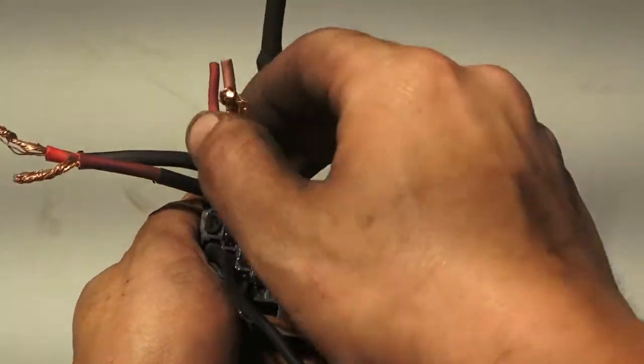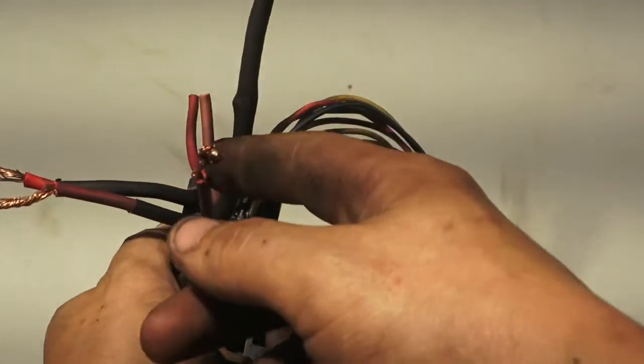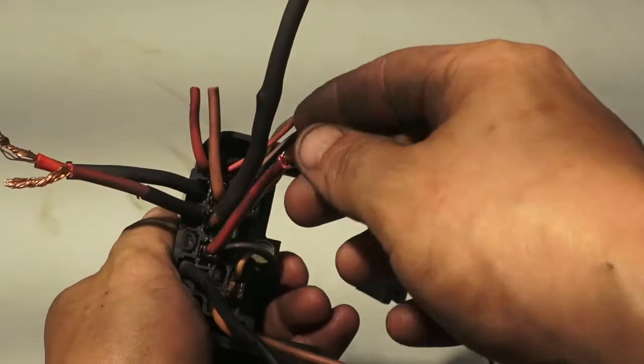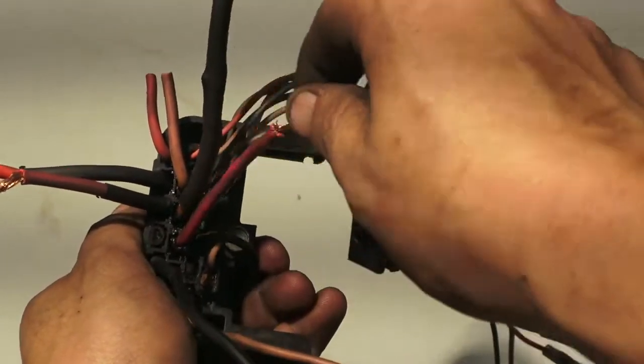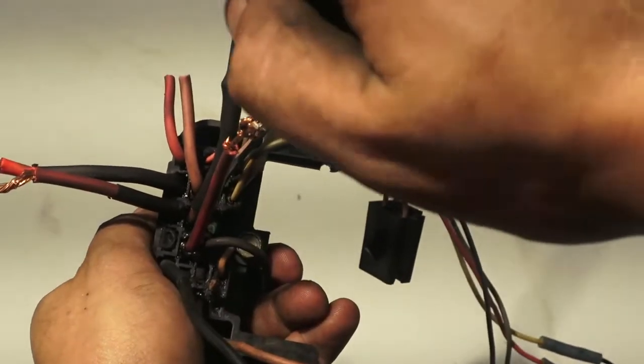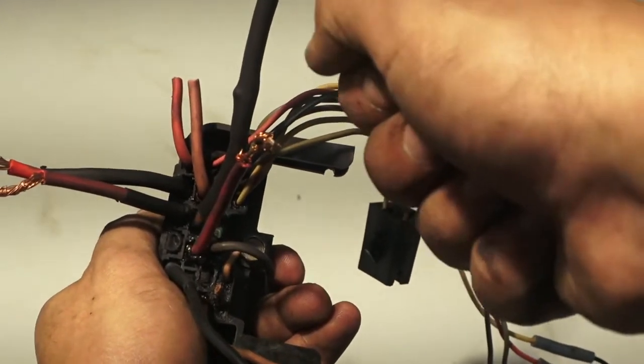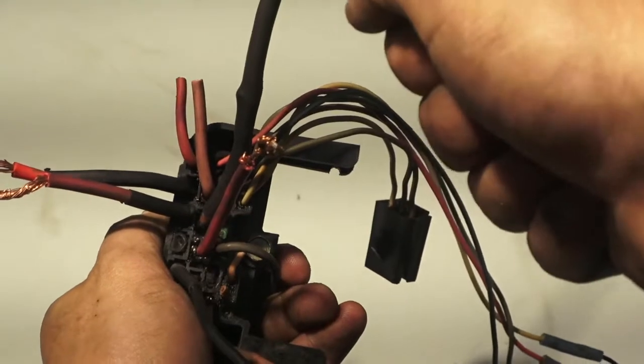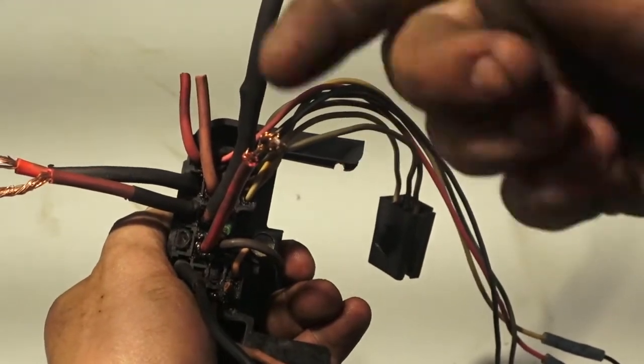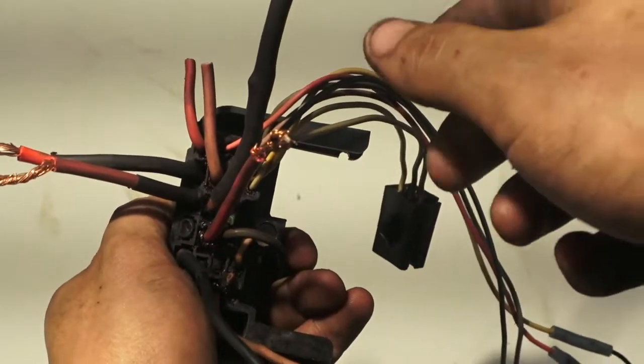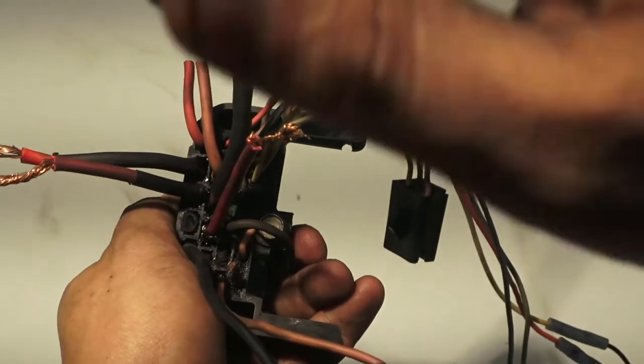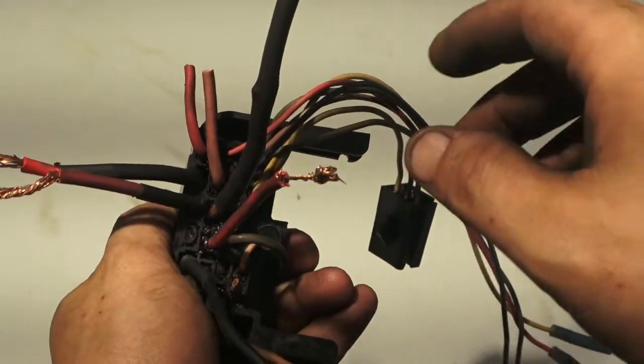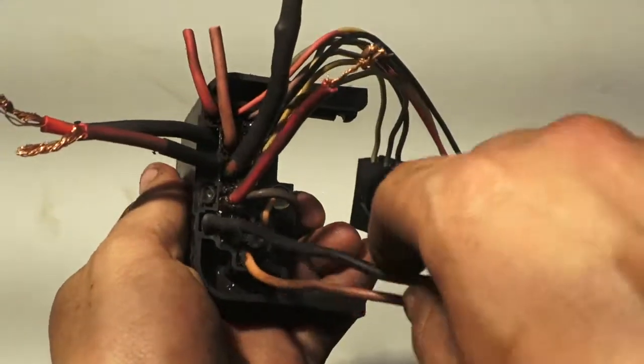And then right underneath that wire right here, this wire originally would have gone to your ignition coil for your distributor, because this here is your switched power. You have 12 volts when you turn the key on and you have 12 volts while you're turning the key as you're starting it. It holds 12 volts, but when you turn the key off, 12 volts goes away from this wire. That's what kills the computer and shuts the truck off.